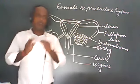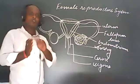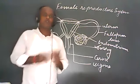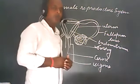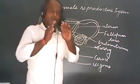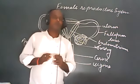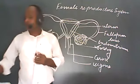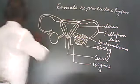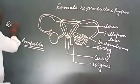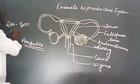During copulation, the sperm is stored in the vaginal tract of the female. The number of sperm released in one ejaculation is near about 200 to 300 million.